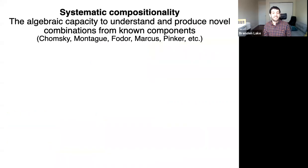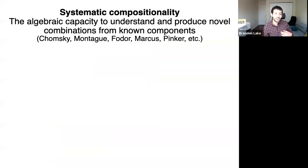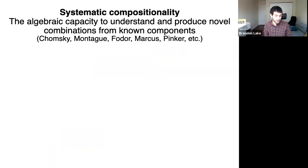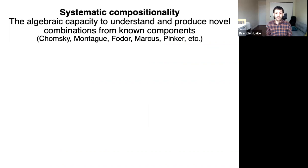I want to understand systematic compositionality, which is the algebraic capacity to understand and produce novel combinations from known components. This has been a very influential idea, both in linguistics and cognitive science, and the names on the slide have written about this idea extensively. I want to give you an example.